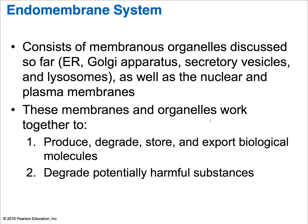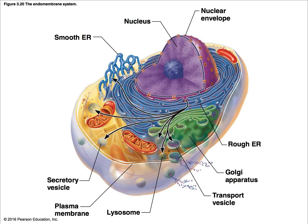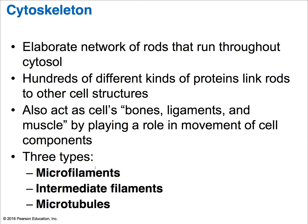Looking at an image showing the smooth ER, rough ER, Golgi apparatus, and mitochondria — it's extremely important that these organelles are membrane-bound. The cytoskeleton is an elaborate network of rods that run throughout the cytosol. It acts as the cell's bones, muscles, and ligaments by providing the cell structure and machinery to generate various cell movements. The three types of rods, from smallest to largest, are microfilaments, intermediate filaments, and microtubules.